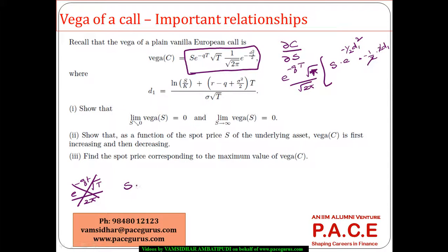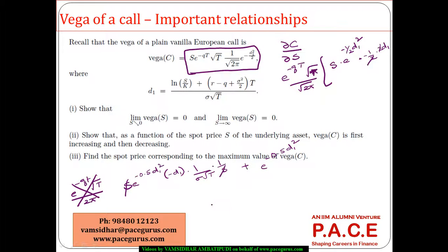The derivative of S multiplied by e to the power minus 0.5 d1 squared gives us: e to the power minus qt times root t over 2pi, times the derivative involving minus d1 times the derivative of d1 with respect to S, which is 1 over sigma times root t, and log S giving 1 over S — so overall those terms cancel. The other part gives e to the power minus 0.5 d1 squared, and taking that factor out, it becomes 1 minus d1 over sigma root t.